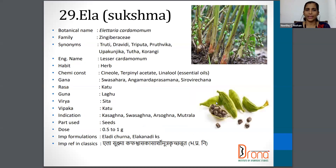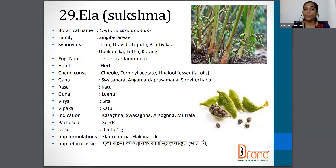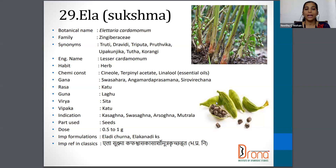The next one is Sukshmaila, with the botanical name Elettaria cardamomum. Family is Zingiberaceae. Synonyms are Dravidi, Triputa, Prithvika, Tutta, Korani, etc. The English name is Lesser Cardamom. The part used is Seeds, and the dosage is 0.5 to 1 gram.